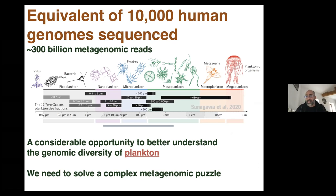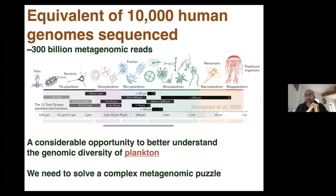Some scientists will dedicate a lot of work on specific filters because they are interested in viruses, and others will focus on other filters. The total volume of this particular project is equivalent to 10,000 human genomes sequenced. This is all Illumina — short reads, very high quality and very high throughput — and what we have is about 300 billion metagenomic reads, all from different genomes or sometimes the same genome. It's a considerable opportunity to better understand the genomic diversity of plankton, but we need to solve a complex metagenomic puzzle.